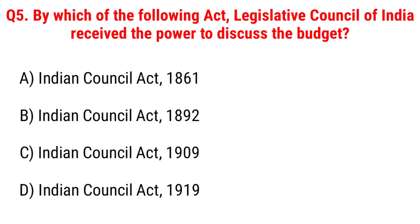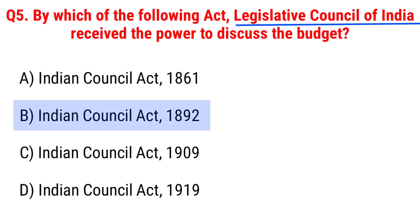Next question: by which of the following acts did the Legislative Council of India receive the power to discuss the budget? Option A, Indian Council Act 1861; B, Indian Council Act 1892; C, Indian Council Act 1909; D, Indian Council Act 1919. The right answer is Option B, Indian Council Act 1892.